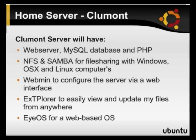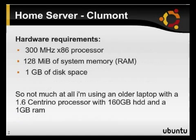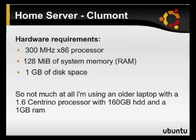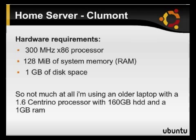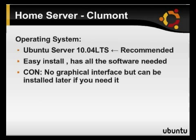Also iOs, a web-based operating system that runs in JavaScript as well — nice and light and has all the applications you actually need. Now, hardware requirements for Ubuntu Server are a 300 MHz processor, 128 megabytes of RAM, and a gig of disk space. I chose to use an older laptop — a 1.6 GHz Centrino processor, 160 gig hard drive, and a gig of RAM. It's more than enough to run what I need, and I haven't had problems so far.